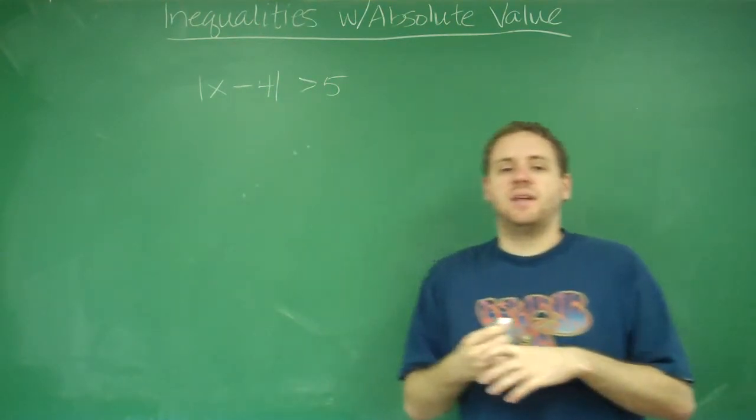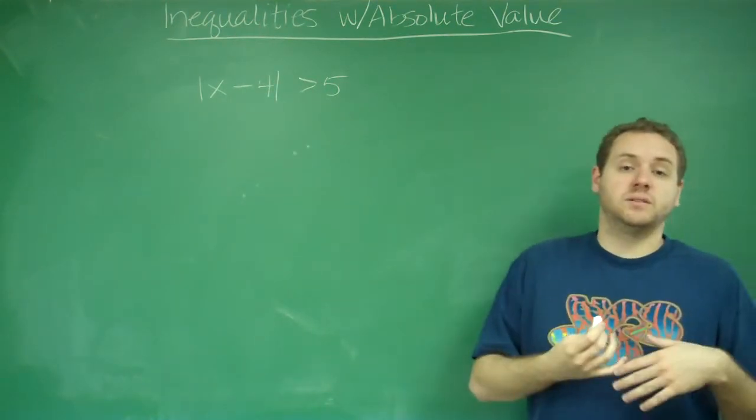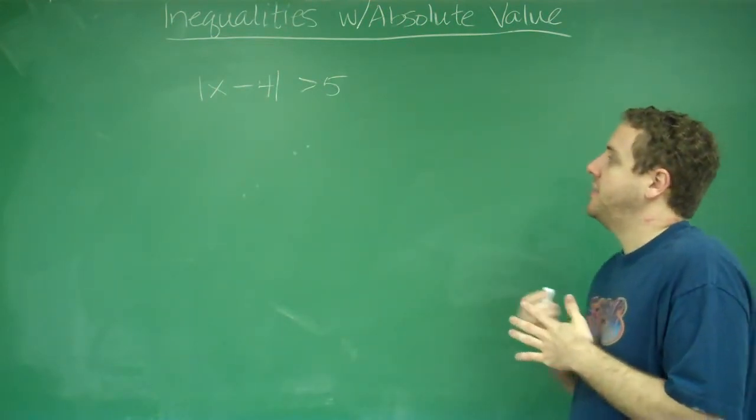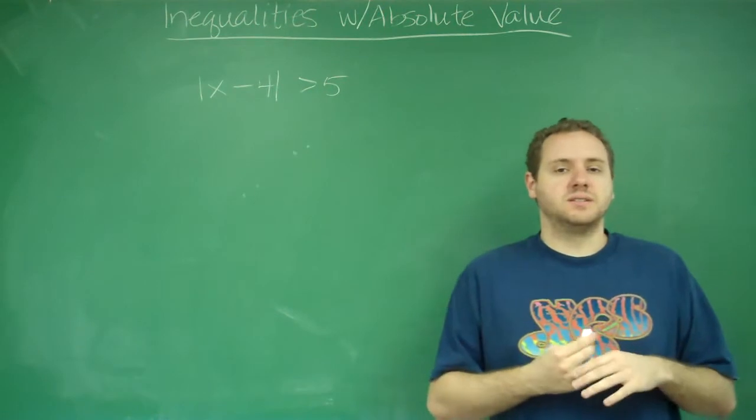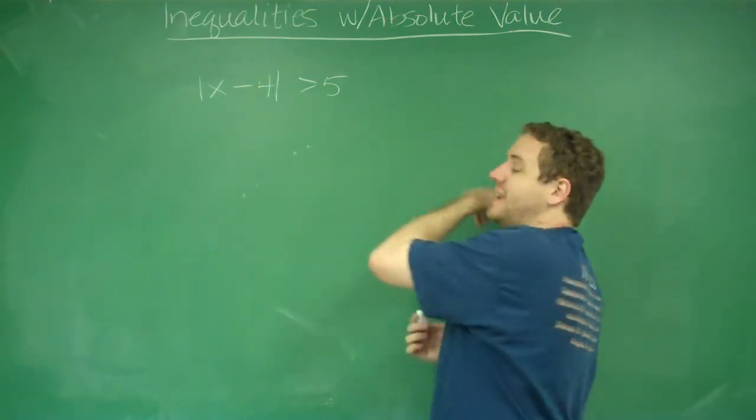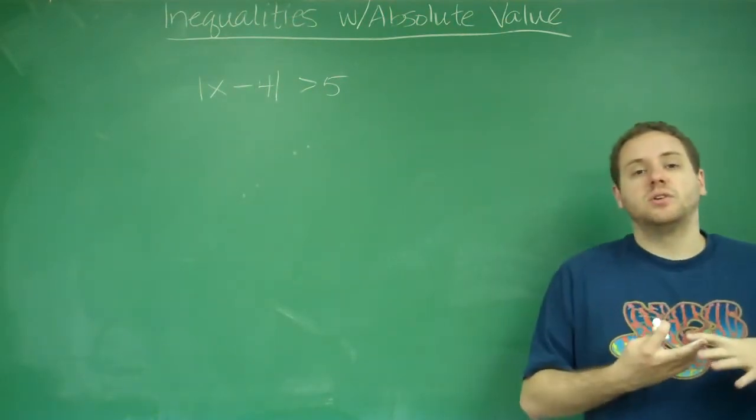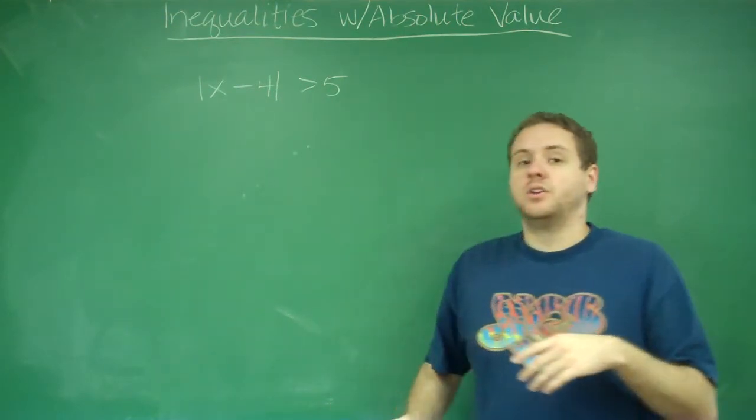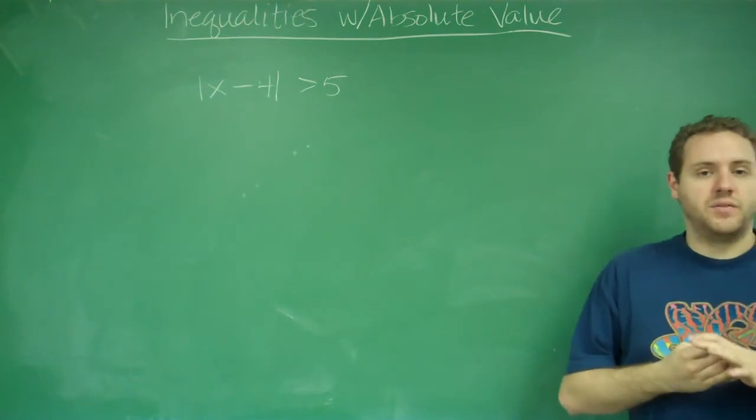Clearly what's inside the absolute value could just be greater than 5, like it could be 8 or 100 or something like that. And then the absolute value of that would certainly still be greater than 5. But it could be a negative number that's large enough too. So it could be negative 8 or negative 100. And if you took the absolute value of that, you would get something that's greater than 5 also.